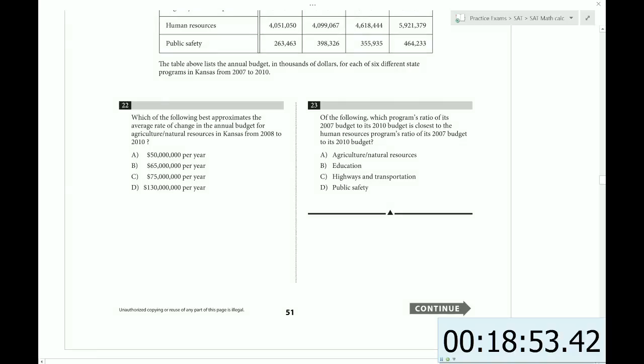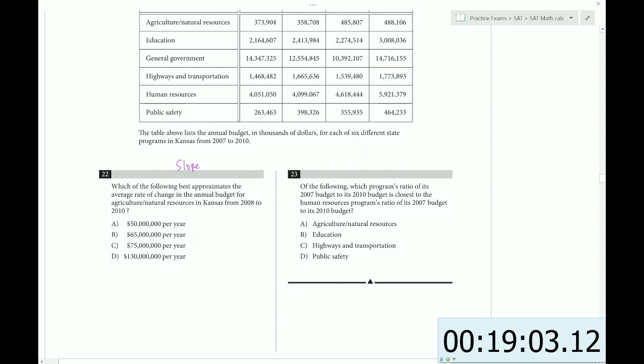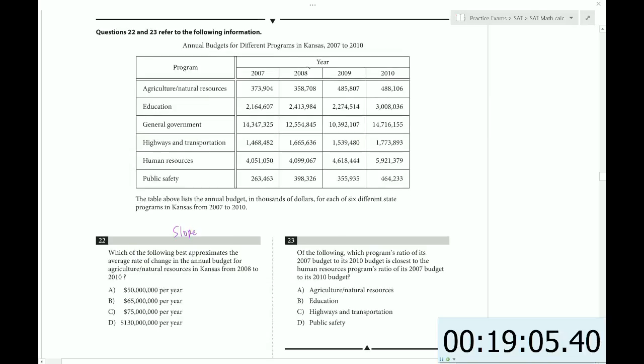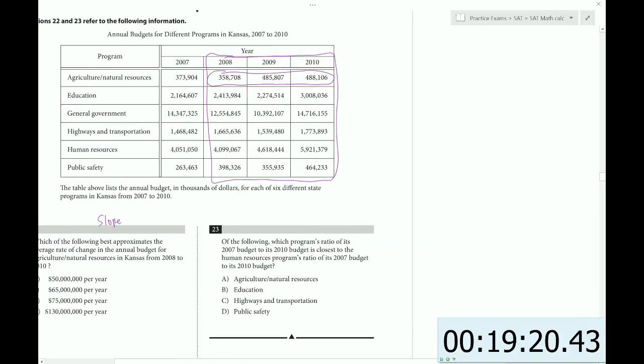Which of the following best approximates the average rate of change, a fancy word for slope, in the annual budget for agricultural natural resources in Kansas from 2008 to 2010? So from 2008 to 2010, we're looking in this range, and we're looking at agriculture natural resources. We want to know the average rate of change, which is also known as the slope.